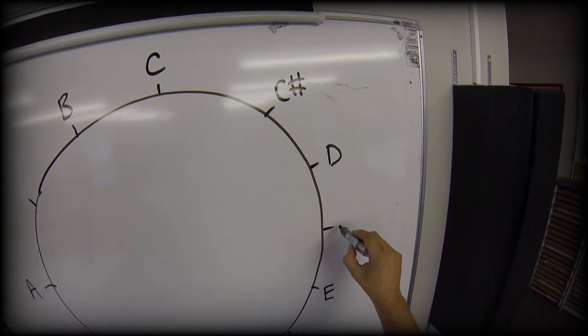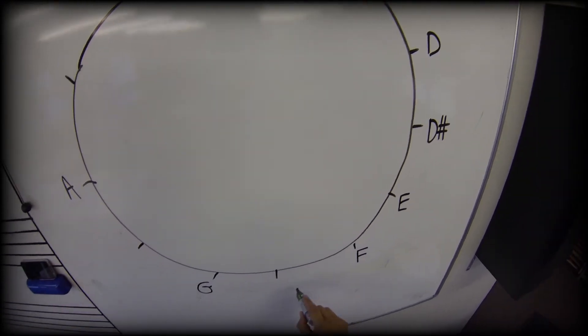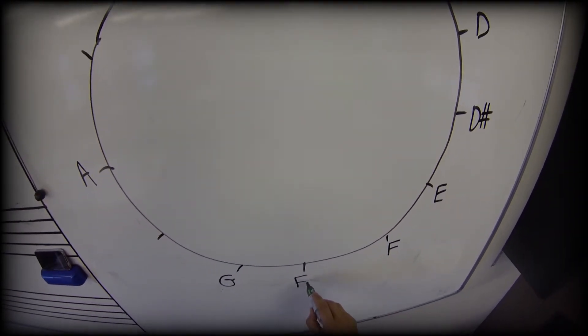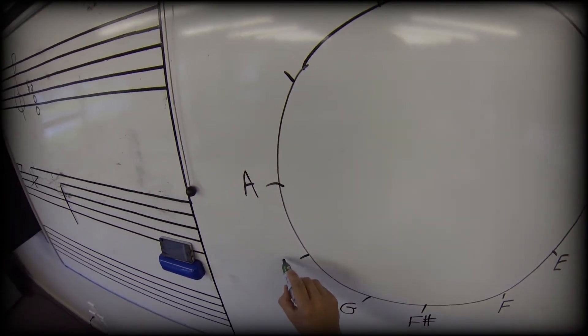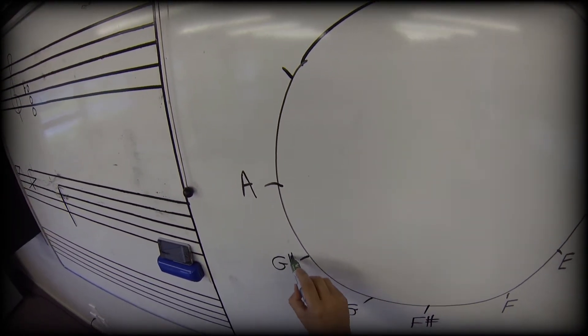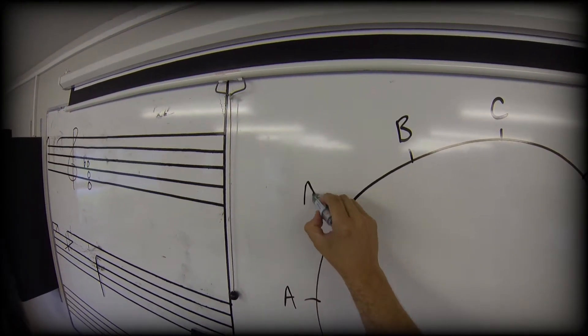D can be sharpened to D sharp, F can be sharpened to F sharp, G sharpened to G sharp, and A can be sharpened to A sharp.